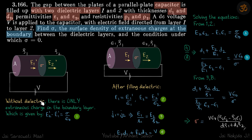Without dielectric there is only extraneous charge on the boundary layer and its value is given by E2 dash minus E1 dash is equal to sigma by epsilon naught.